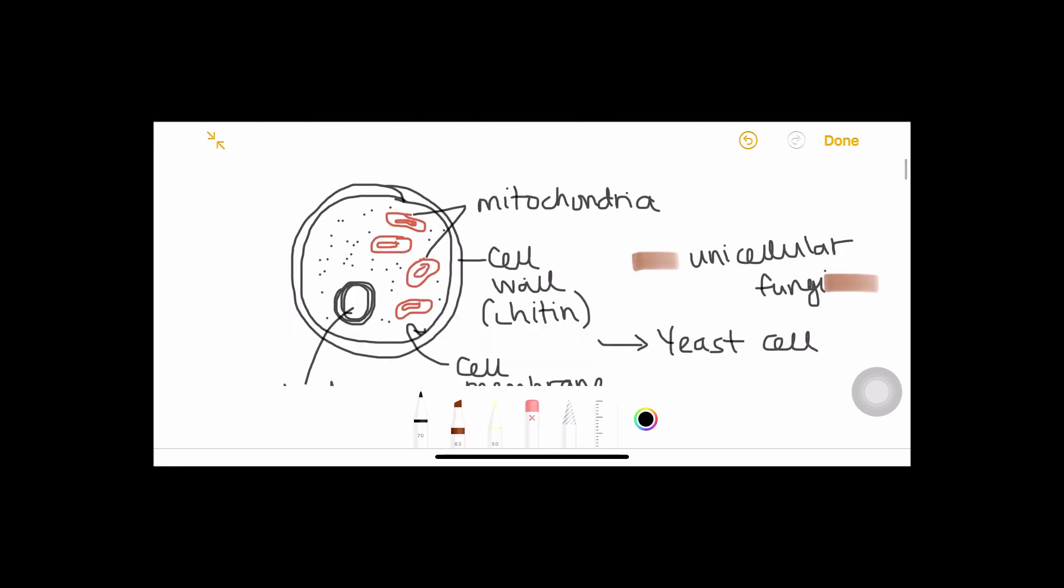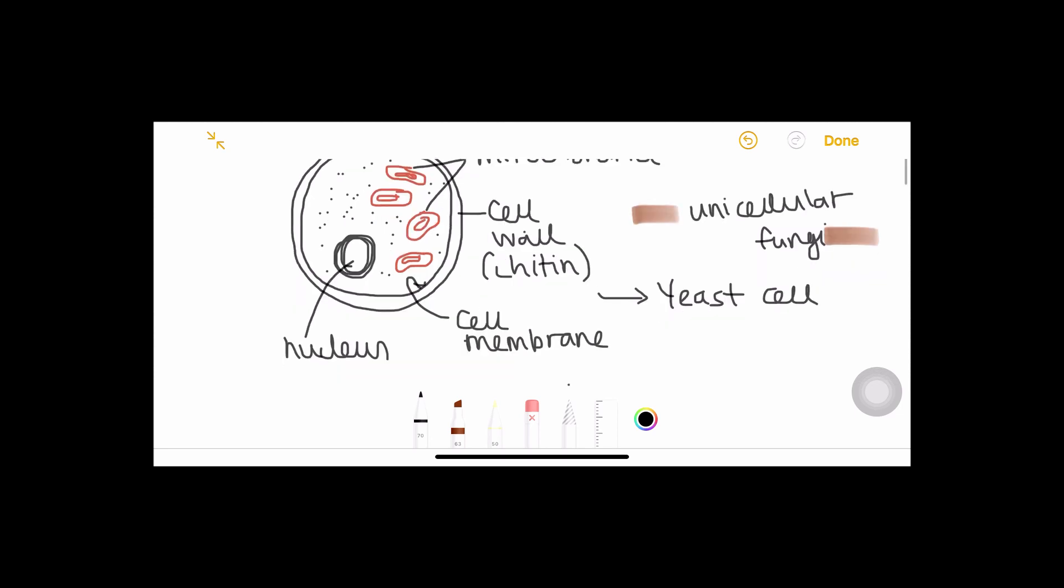The most important characteristic of fungi is that they are divided into two parts. They can be unicellular fungi like the one that I have drawn here. This is an example of a yeast cell, the yeast that you add in bread, that comes with pizza, that is used in beer production. That is a unicellular fungi.